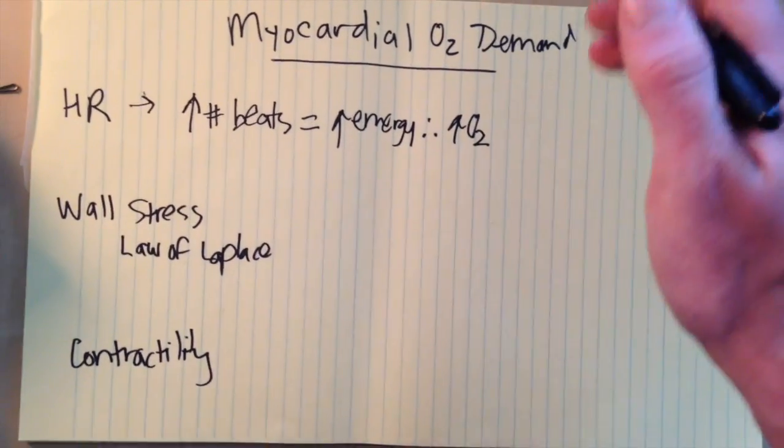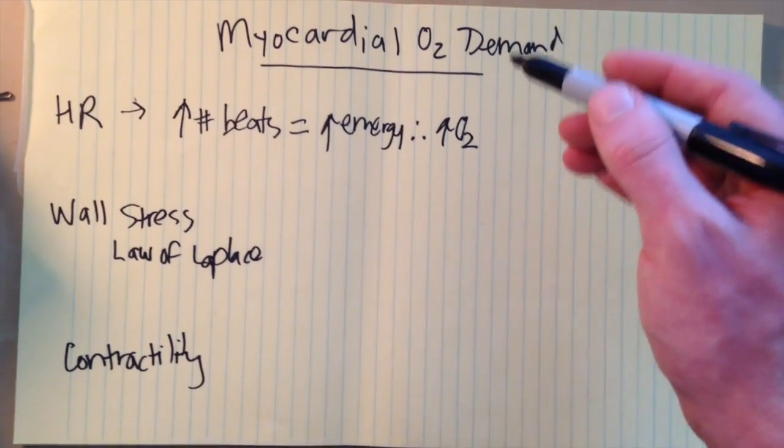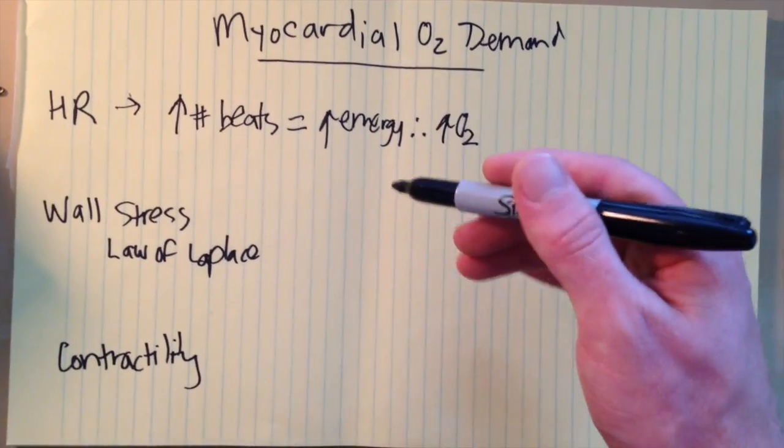So a higher heart rate equals increased myocardial oxygen demand. I think that's fairly easy to understand.